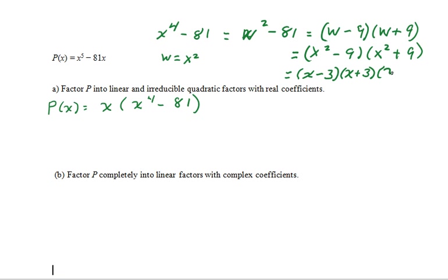Then we still have the factor x squared plus 9. And so, P(x) factors into x times x minus 3 times x plus 3 times x squared plus 9.